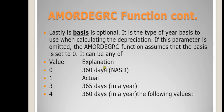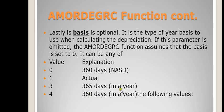If the basis parameter is omitted, the function automatically assumes the basis is set to zero. Otherwise, it can be any of these values: if it's zero, it assumes a basis of 360 days; if it's one, it assumes the actual number of days; if it's three, it assumes 365 days in a year; and if it's four, it assumes 360 days in a year.